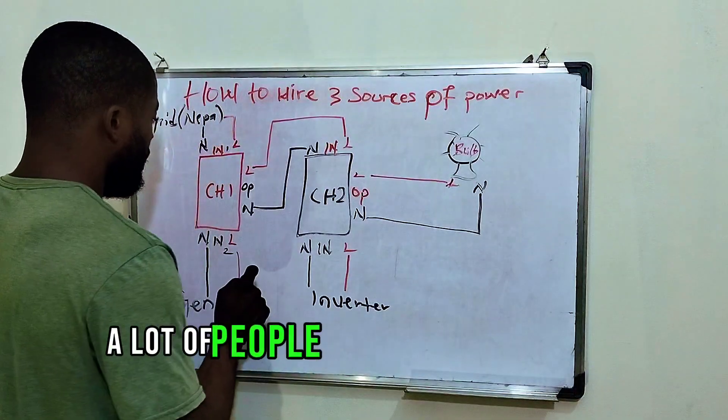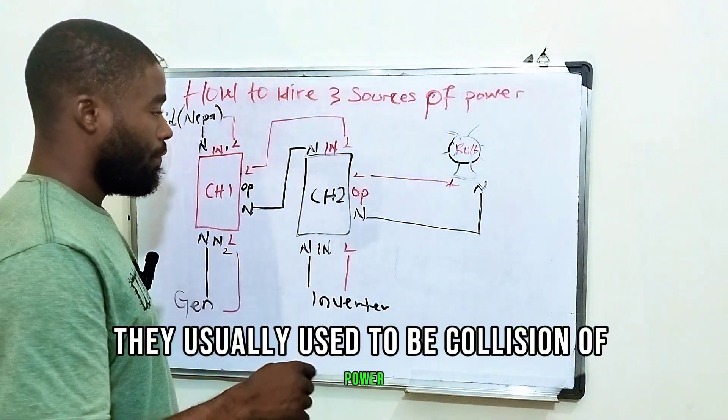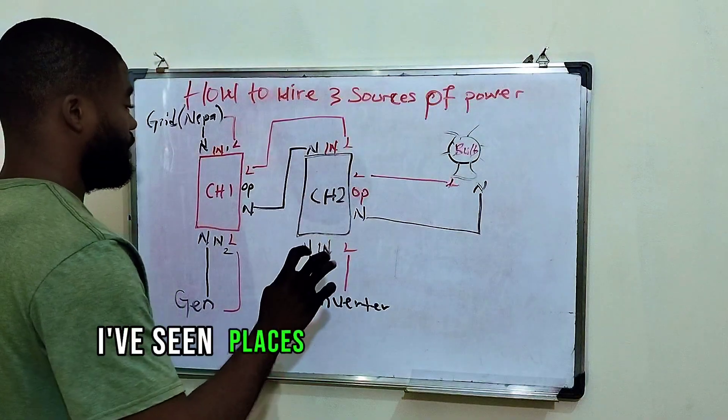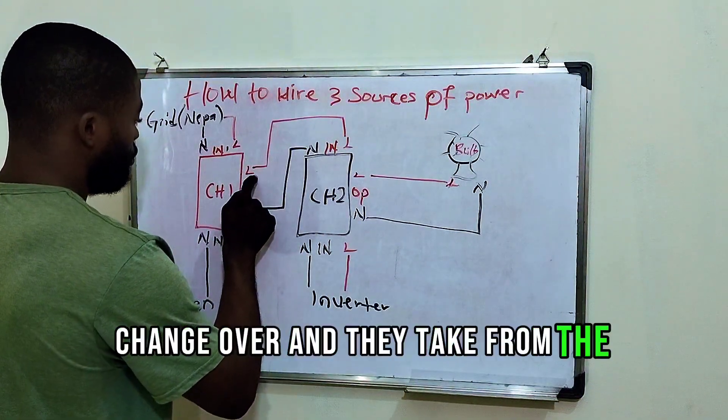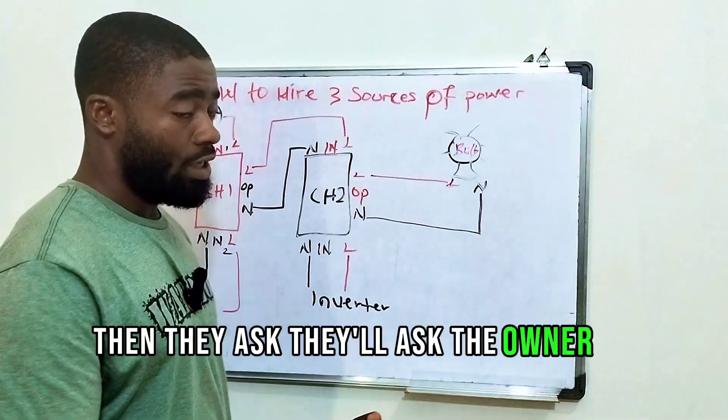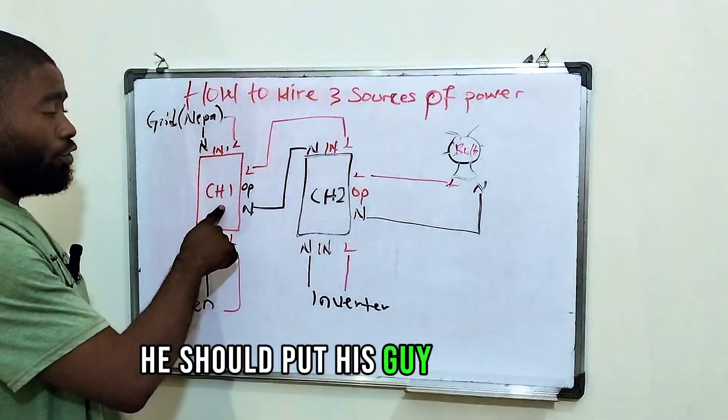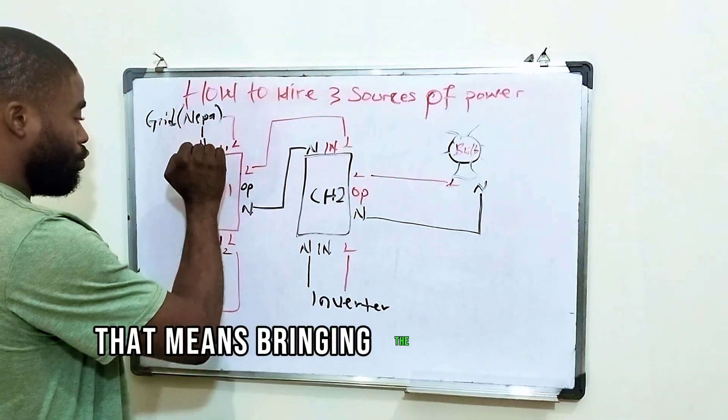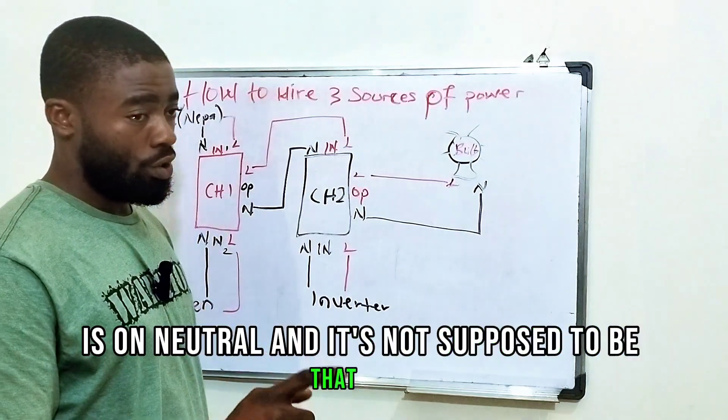The way a lot of people connect them, there usually ends up being collision of power. For example, I've seen places where some people wire these two manual changeovers and they take from the output of this one to the output of this one. Then they'll ask the owner of the house that whenever he wants to use inverter, he should put this one on neutral. That means bringing the switch to the middle is on neutral and it's not supposed to be that way.